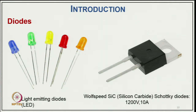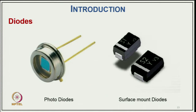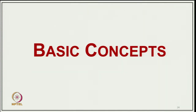Schottky diodes — for example, silicon carbide Schottky diodes rated at 1200V and 10A — are considered fast diodes with very small conduction losses. Photo diodes are widely used for position detection (rotary or linear position), counting applications when light is interrupted, and in many physical gadgets for practical applications. Surface-mounted diodes are also available.